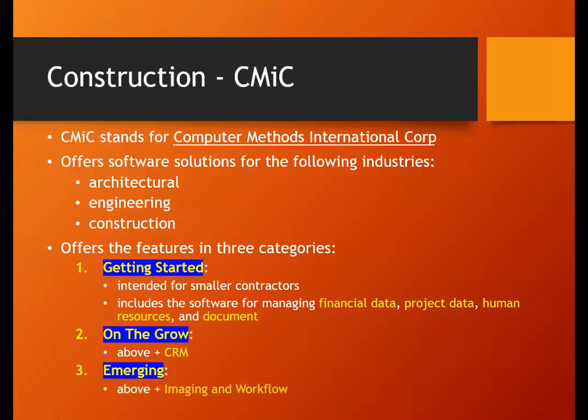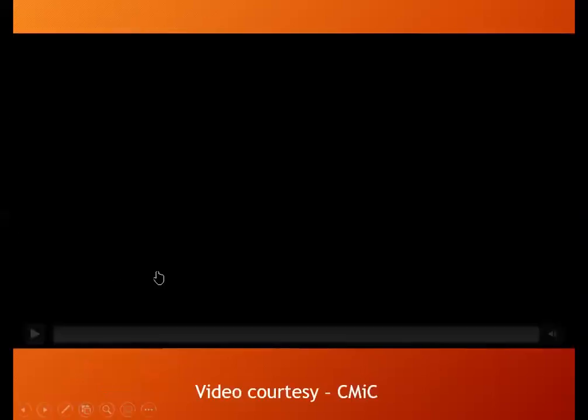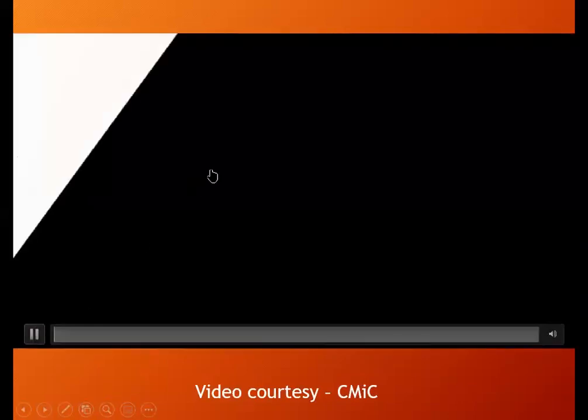The third tier, Emerging, includes everything from the first and second categories plus imaging and workflow — which refers to an advanced level of CAD and CAM software built into the CMIC cloud software. Engineers can dynamically create or save all images and manage workflow. Let me play a short video to show how this particular CMIC works.